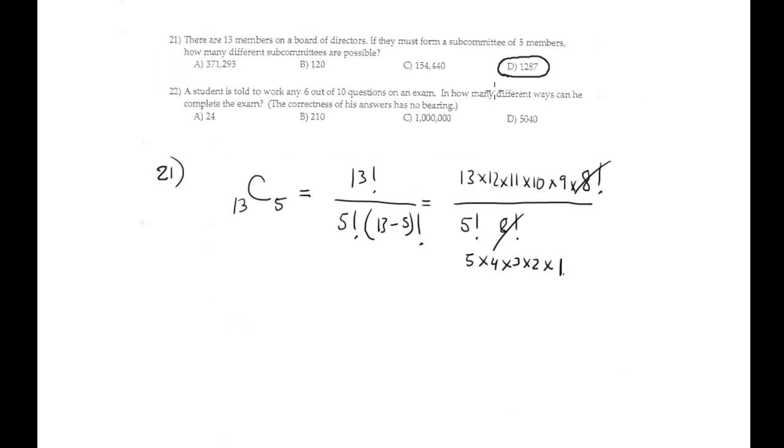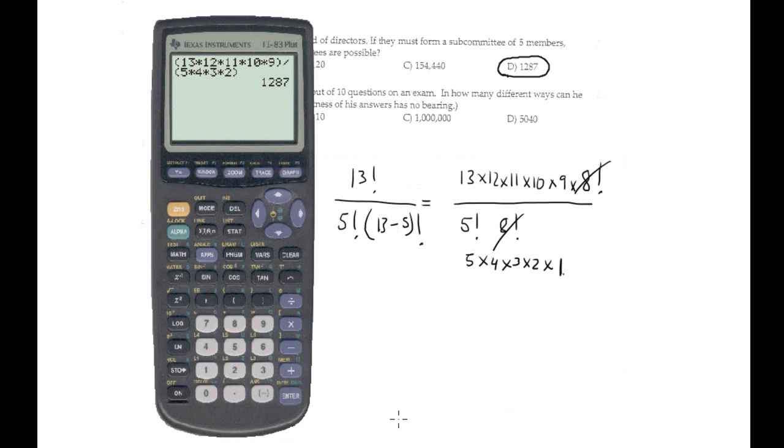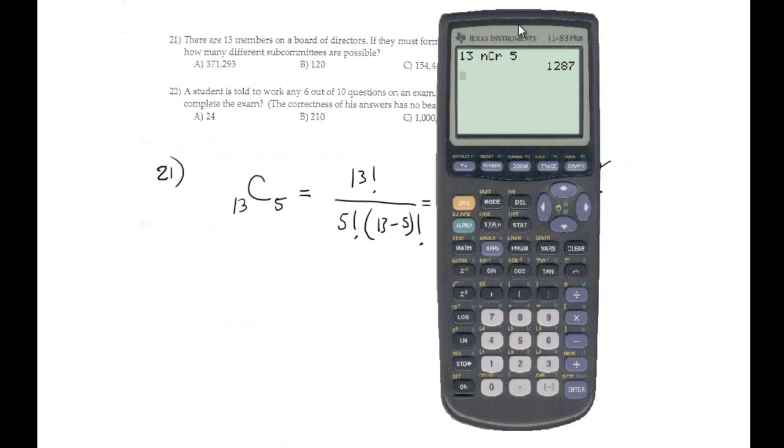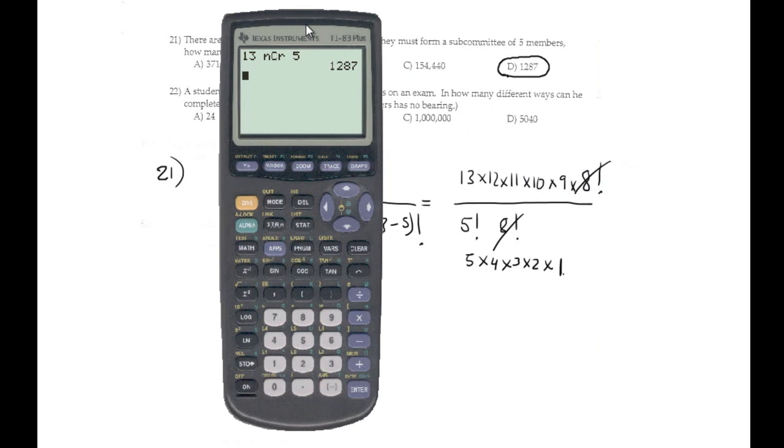Okay, but much better using directly the calculator to compute the combination. As always, you put 13, combination, 13 elements, mathematics, PRB, option 3, combination, add 5. We get the same answer, 1,287.